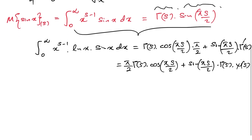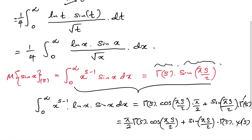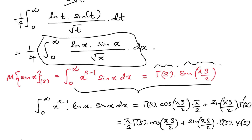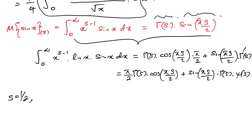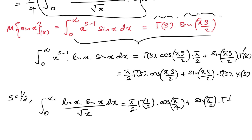Now we substitute s equal to one half. With s = 1/2, x to the s minus 1 becomes x to the minus one half, which is 1 over the square root of x — exactly what we need. So our integral from 0 to infinity of natural log of x times sine of x over the square root of x dx equals pi over 2 times gamma of one half times cosine of pi over 4, plus sine of pi over 4 times gamma of one half times digamma of one half.